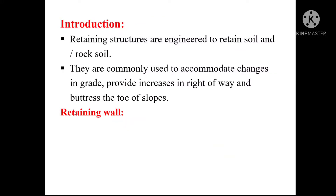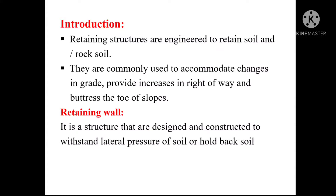If the face inclination is greater than 70 degrees, they are typically characterized as retaining walls, while slopes have face inclination flatter than 70 degrees. There are several types of retaining structures including gravity, sheet pile, cantilevered and anchored earth, and mechanically stabilized earth — that is, reinforced earth walls and slopes. A retaining wall is a structure designed and constructed to withstand lateral pressure of soil or hold back soil materials. The lateral pressure could also be due to earth filling, liquid pressure, sand, and other granular materials behind the retaining wall.